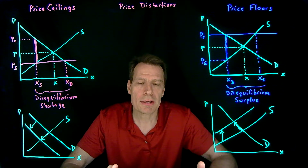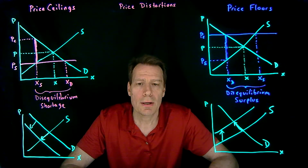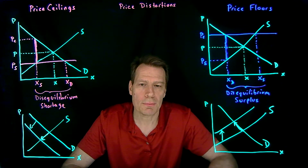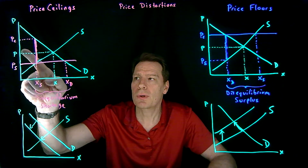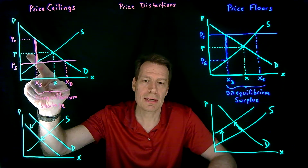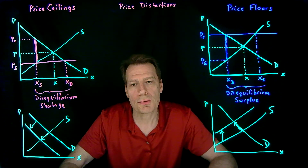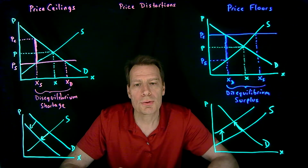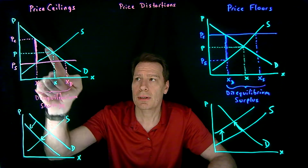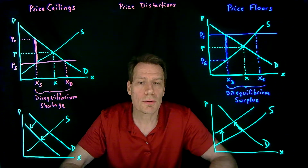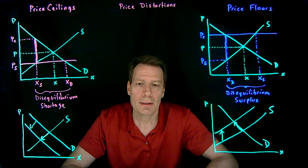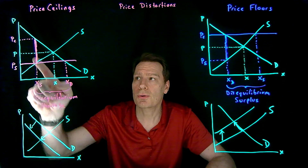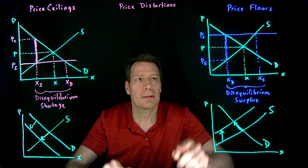If, on the other hand, consumers are bribing someone to be sure that they are the ones getting to the goods, then at least someone is receiving that bribe, so it wouldn't be lost — and in that case it wouldn't be part of deadweight loss. So it's a little ambiguous as to what this rectangle becomes: is it part of deadweight loss, or is it just a transfer from one person to another? It depends on what form the effort costs take. So the smallest possible deadweight loss is the triangle from the goods no longer being produced, but if effort costs are truly socially wasteful, the biggest possible deadweight loss could also include the rectangle in both cases.